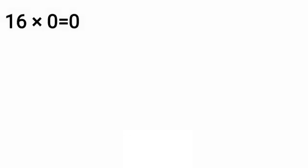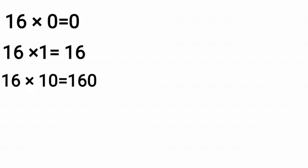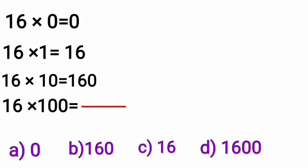Next question. 16 zeros are 0. 16 ones are 16. 16 tens are 160. Then, 16 hundreds are. Let's find. Here, we have 4 options. And from these 4 options, we have to find.